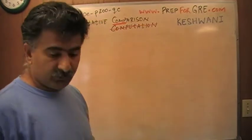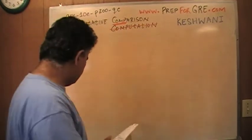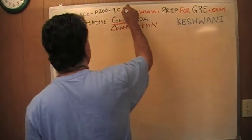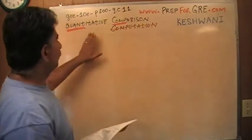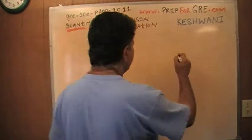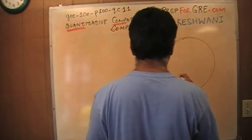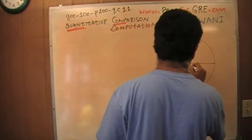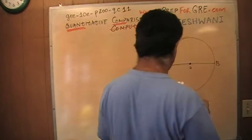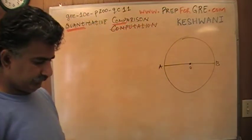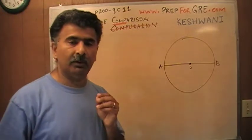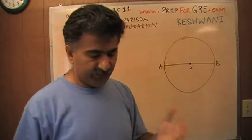The problem that I'm about to solve is the one you're going to find on page 200. Quantitative comparison question number 11. Let's take a look at it. They give you a picture here. A to B is the diameter because it goes through the center, and they tell you that O is the center of the circle. That's how you know if the line is going through the center, it is the diameter.